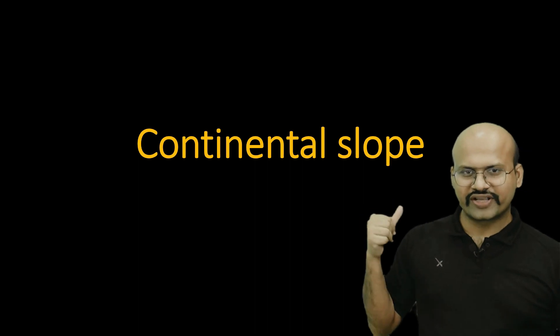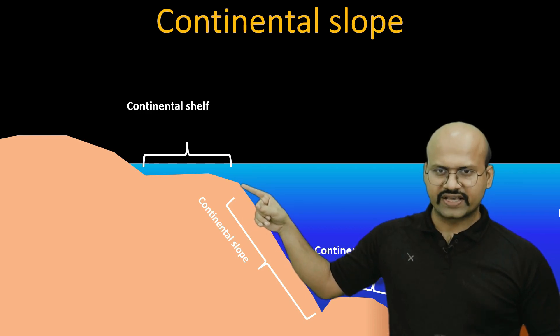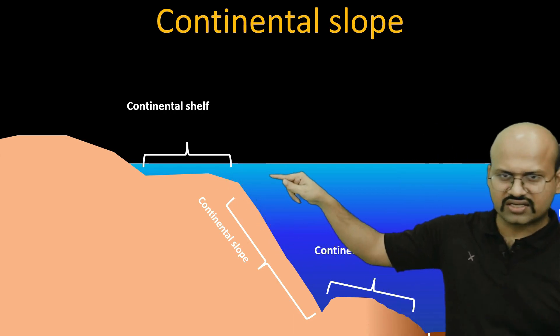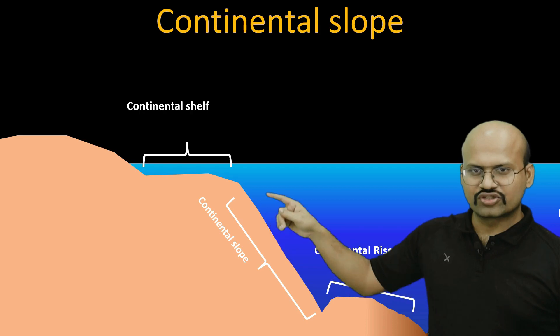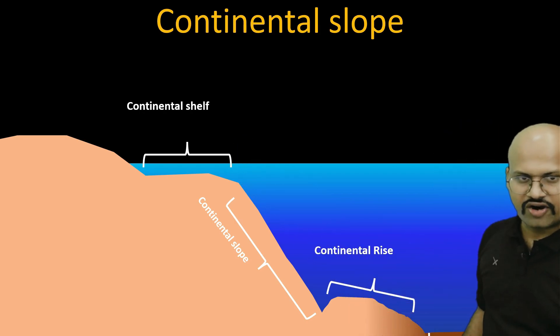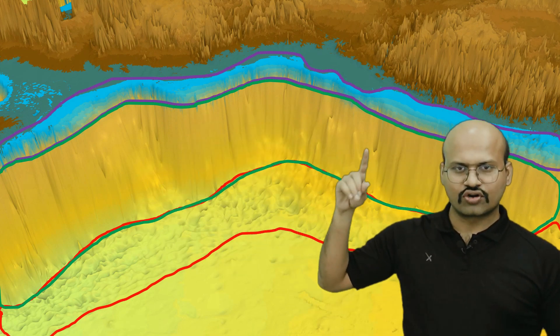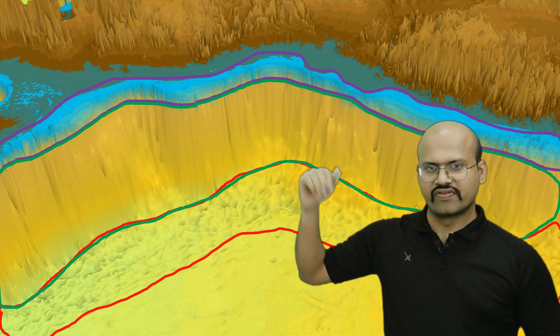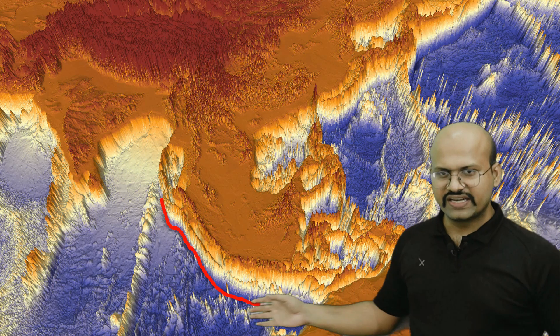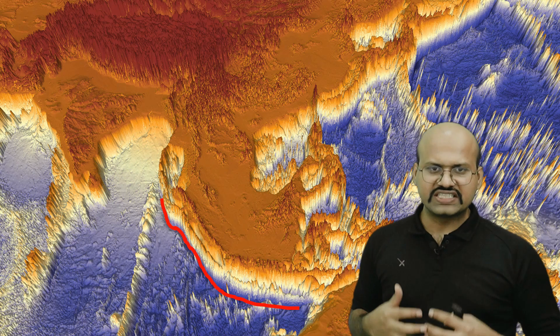After the continental shelf ends, this point is called the shelf break. Beyond that, the continental crust starts to dip with a very high slope — this is called the continental slope. It connects the continental shelf with the abyssal plains found on the ocean floor. The continental slope can be very steep in subduction regions; for example, where the Indian plate subducts under the Eurasian plate, the slope is very steep.